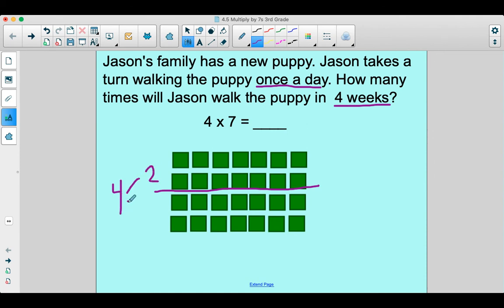So we broke it apart into a two and a two, and we knew 2 × 7 was 14. And then another 2 × 7 was 14. And you can count the squares to prove that, right? If you counted each and every square, you'd count to 28. So no matter what way you look at it, 4 × 7 is a whopping 28.